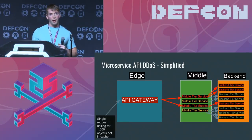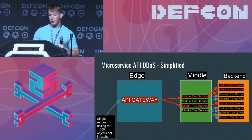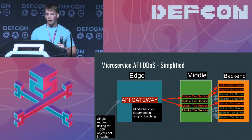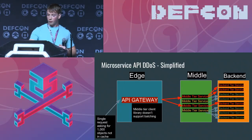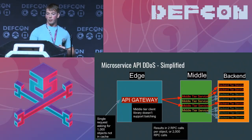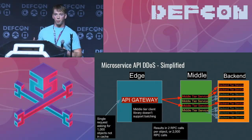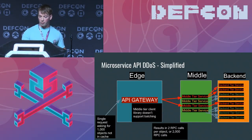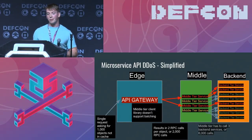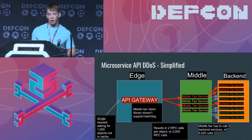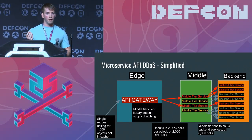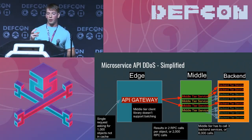Stepping back through the example: we have that single request asking for a thousand objects not in cache. The middle tier library doesn't support batching, so the gateway has to make an RPC call for every object we're asking for. Since we're asking for a thousand objects and two middle tier services have to be returned for this specific request, that results in 2,000 RPC calls. Those middle tier services need to call three backend services, resulting in 6,000 calls. There's an opportunity for a lot more requests to happen once we get to the API gateway.